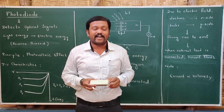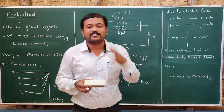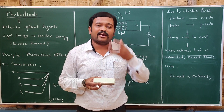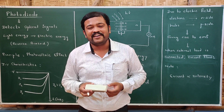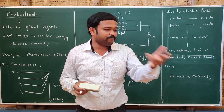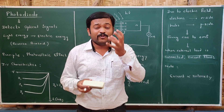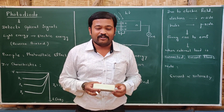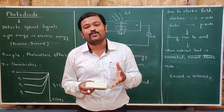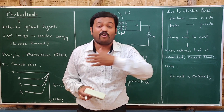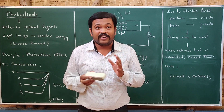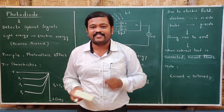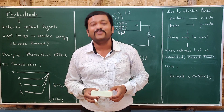Photodiodes are used in cameras to detect light intensity, and in sensors. You may have seen in banks that cash-counting machines count the number of notes — those also use LEDs and photodiodes. Whenever there is light, the photodiode detects it. There are many applications of photodiodes.